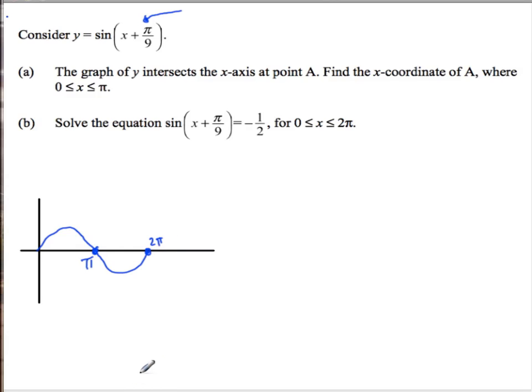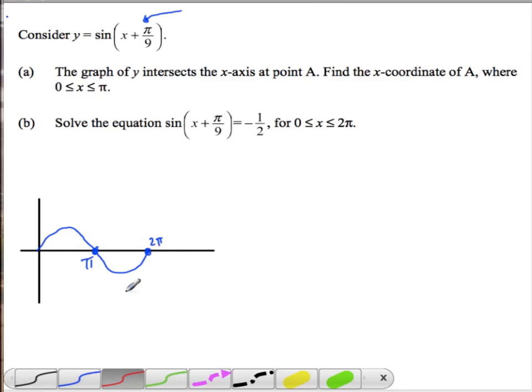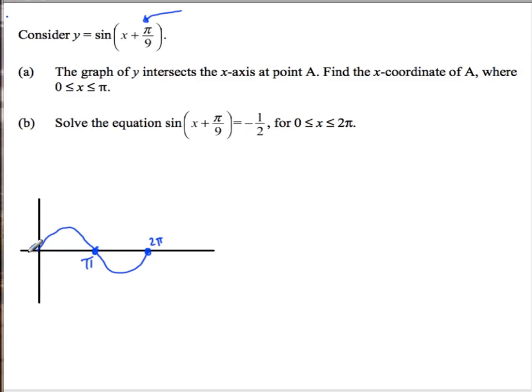And then if I take a new function, the exact same function sine x, and shift it pi over 9 to the left, it's the exact same function just shifted a little bit. So that spot right there, if I shifted it from pi by pi over 9, that would be 8 pi over 9. So this is 8 pi over 9. So that would be the graphical way, that would be, I think, the smart way.